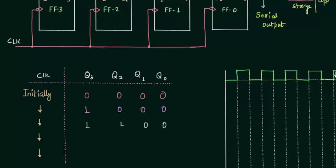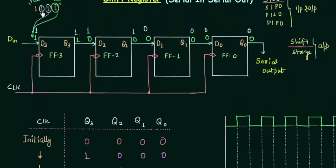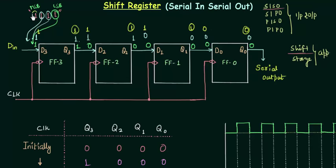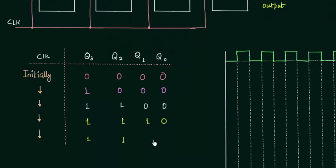For the third falling edge, we again give 1 to D3. Q3 is 1 so D2 is 1, Q2 is 1 so D1 is 1, and Q1 is 0 so D0 is 0. Inputs are 1110 and the output is 1110. Finally, we introduce the MSB 1 to D3, and after the fourth falling edge the output will be 1111, which is the complete number stored in the shift register.